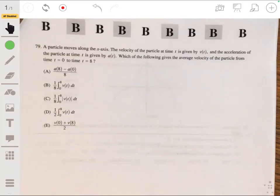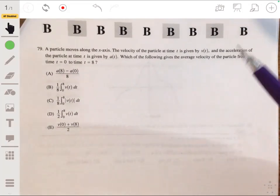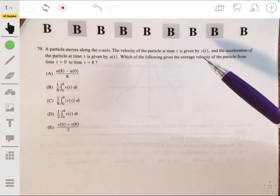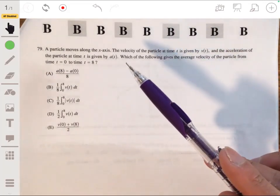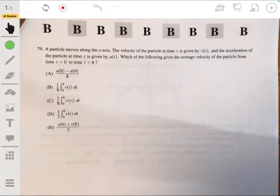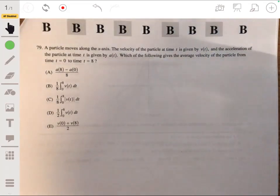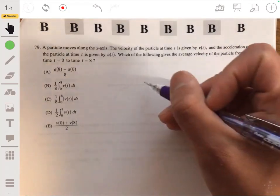All right, in 79, we have a particle that moves along the x-axis. The velocity of the particle at time t is given by v(t), and the acceleration of the particle at time t is given by a(t). Which of the following gives the average velocity of the particle from time t = 0 to time t = a?